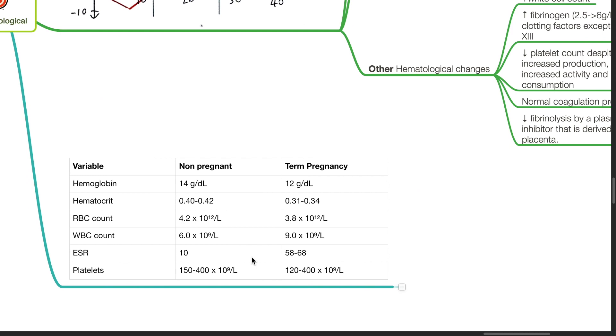This table shows the difference between the various hematological parameters between a non-pregnant and a term pregnancy. For non-pregnant, hemoglobin is 14. Term pregnancy is 12 grams per deciliter. Hematocrit in non-pregnant is 40 to 42%. In term pregnancy is 31 to 34%.